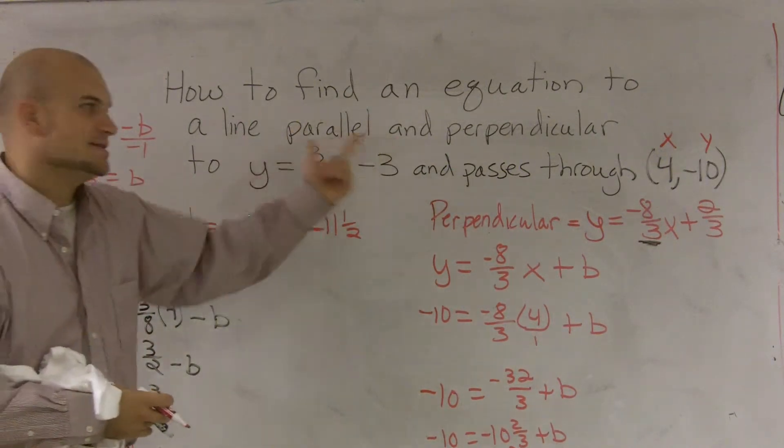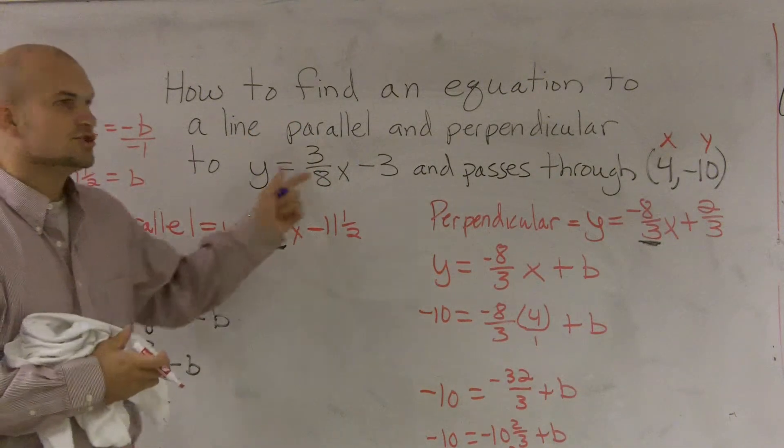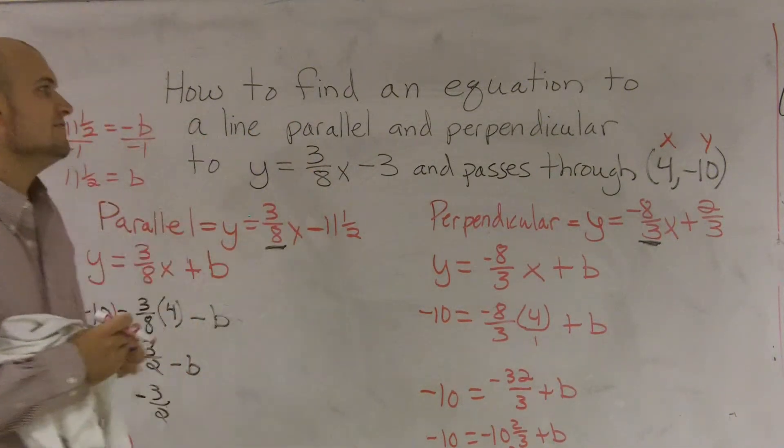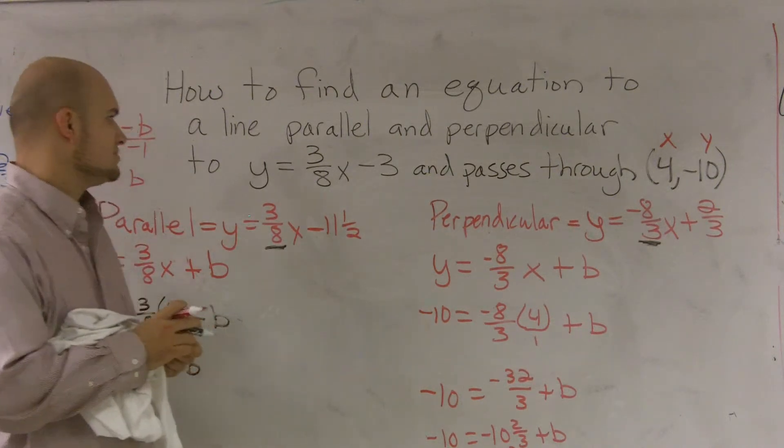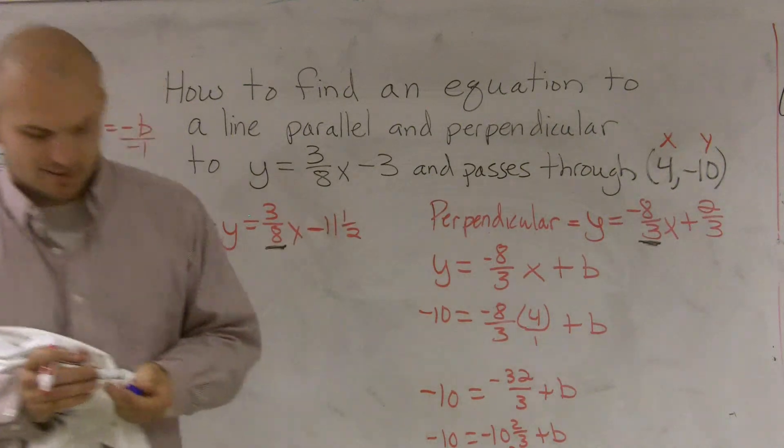But all we do is the process is we just take our points and we plug them in. And this is using the slope intercept method. So that's how you find an equation of a line parallel and perpendicular to an equation that passes through a point using the slope intercept method.